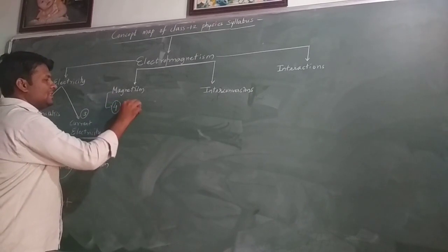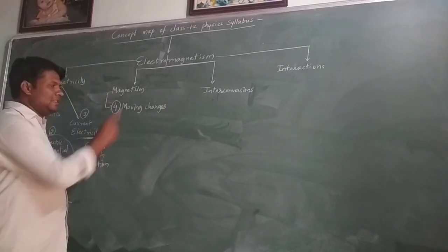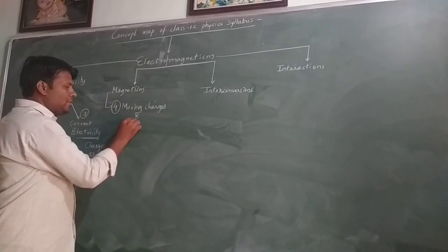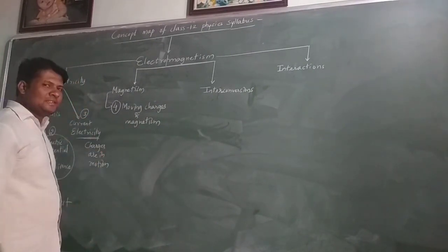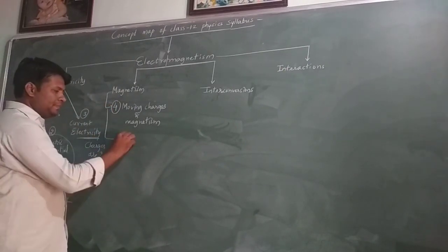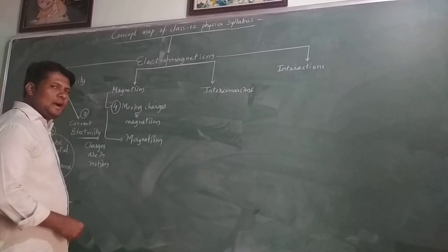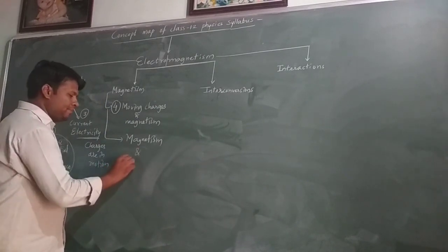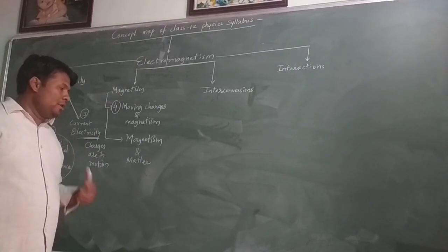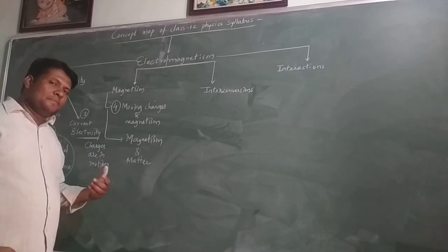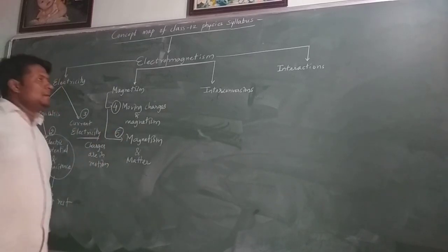The fourth chapter is Moving Charges and Magnetism — when charges begin to move over a conductor, that produces the property of magnetism. The fifth chapter is Magnetism and Matter, where we study specifically about magnets — both natural and artificial — and how materials with more or less magnetic properties behave.